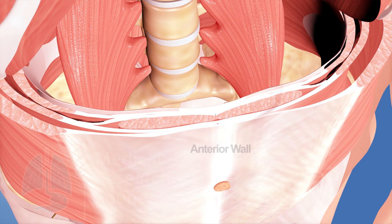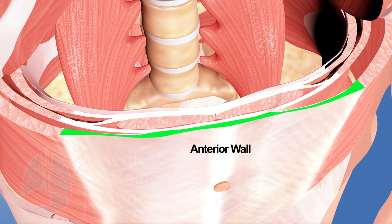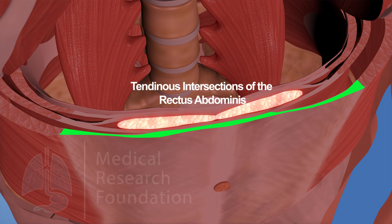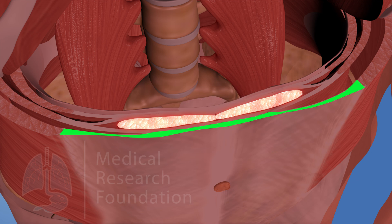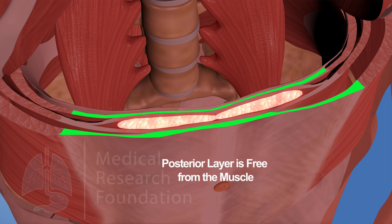The anterior wall of the rectus sheath is firmly adherent to the tendinous intersections of the rectus abdominis, whereas its posterior layer is free from the muscle.